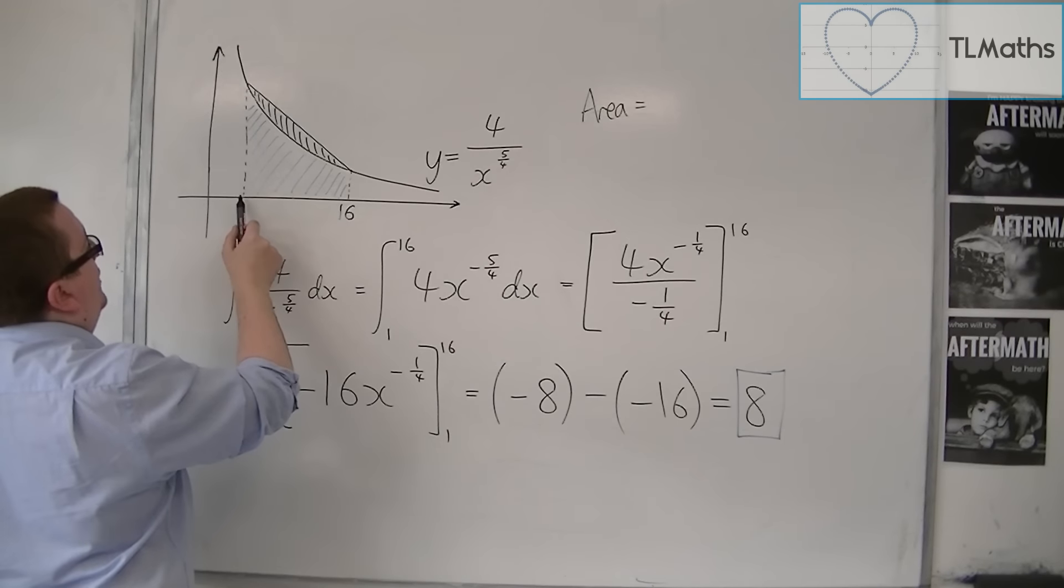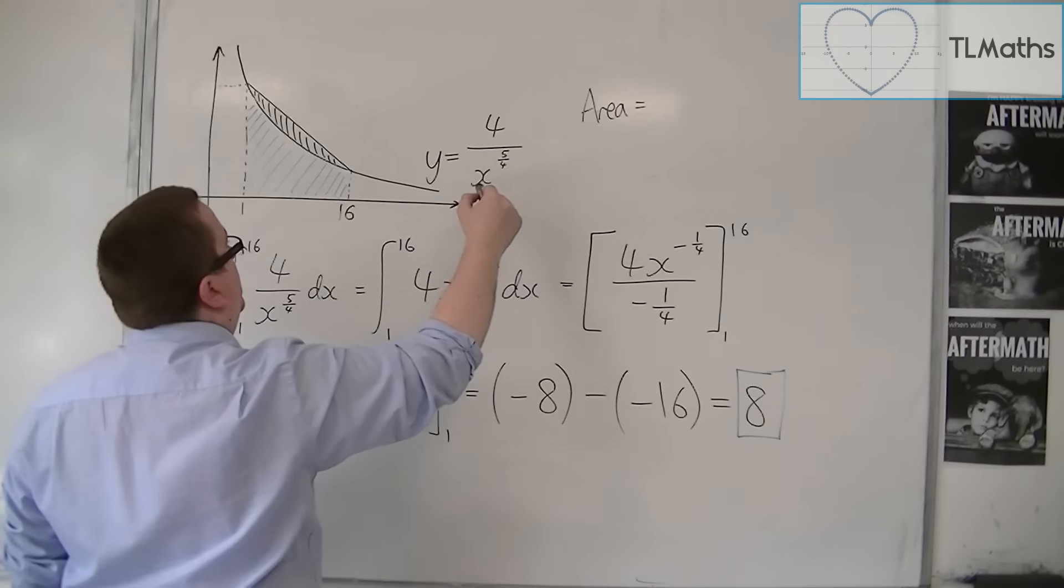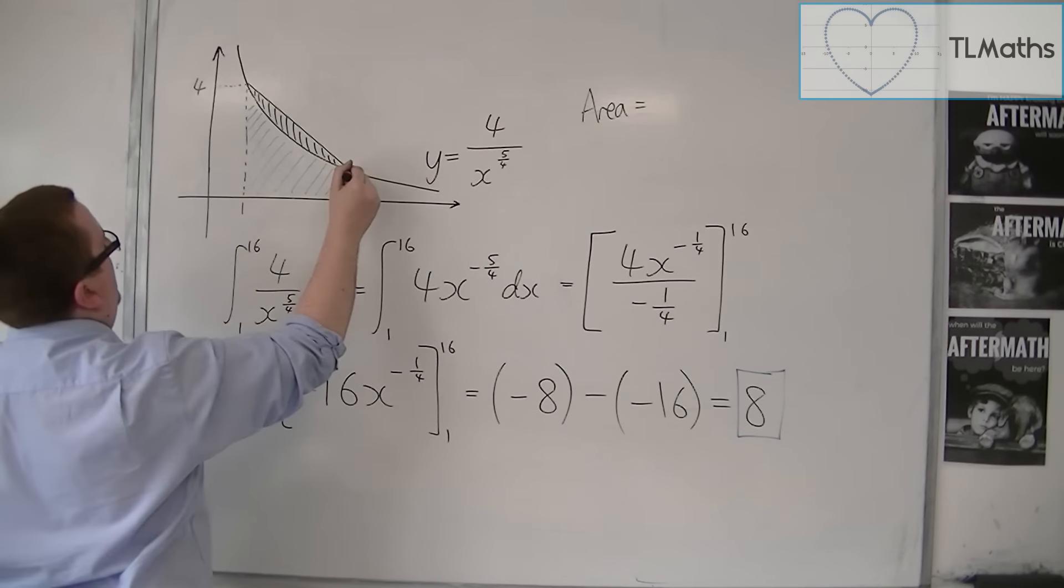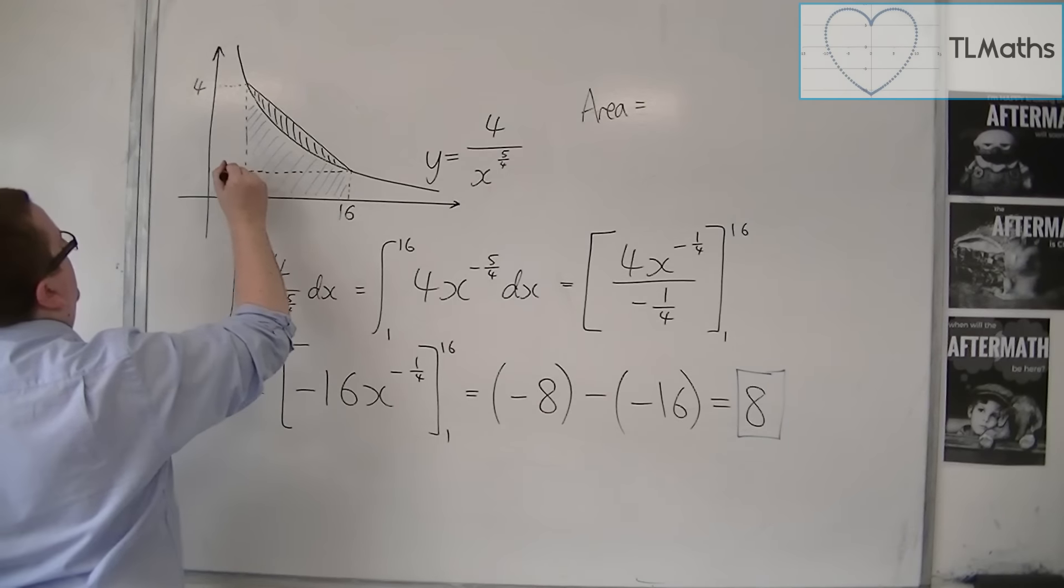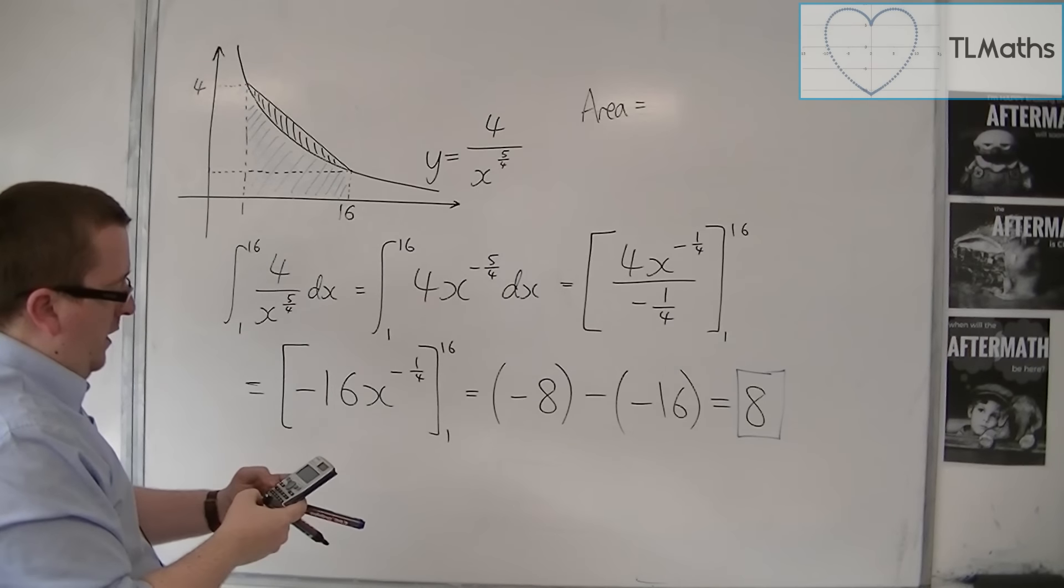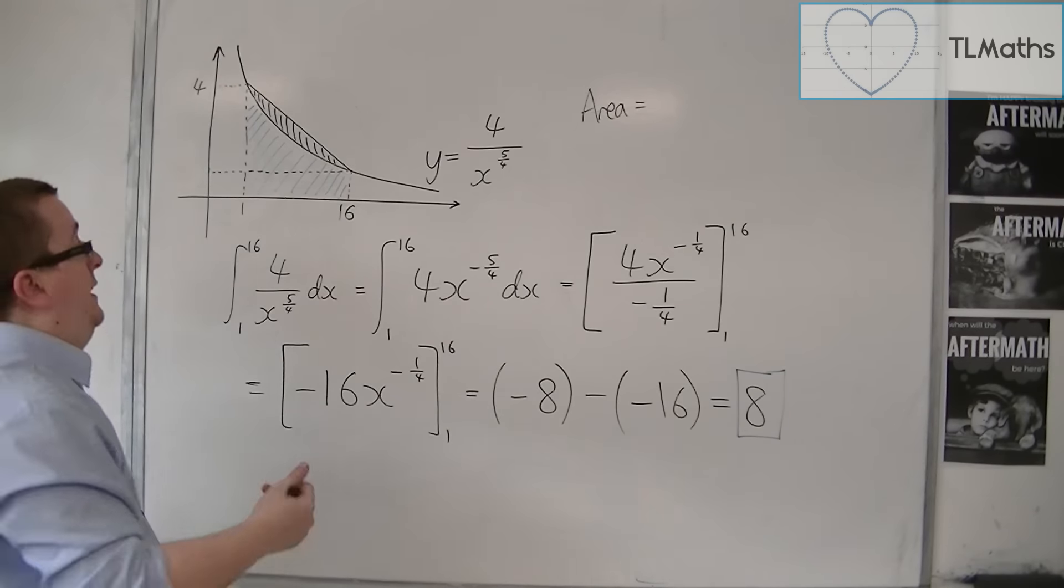So when x is 1, I can substitute 1 into this, and I get 4 over 1, so this is 4. And when x is 16, I can substitute 16 into that. I have 4 over 16 to the power of 5 quarters, and that gets me 1 eighth.